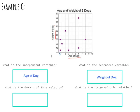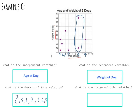Looking at the domain, we have points at one-half, one, two, three, six, and eight. If more than one point shares the same x value — for example, two points at six — we only write it down once, because we just need to record that six is part of the domain. So our domain, written with braces in order from least to greatest, is: {0.5, 1, 2, 3, 6, 8}.